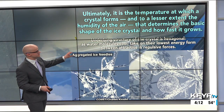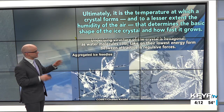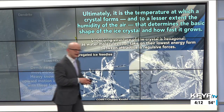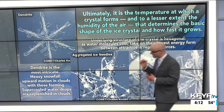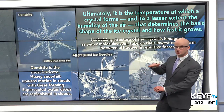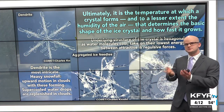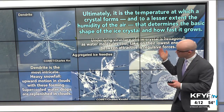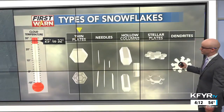The underlying structure of the crystal is hexagonal. As the water molecules cool, they take on their lowest energy form between attractive and repulsive forces with other molecules around them — that's why we usually get the six-sided snowflakes. You can also get needles, which don't stack up as efficiently as dendrites, which are the most intricate. That's when you get your heaviest snowfall. When you have upward motion in the clouds with these forming, that supplies more supercooled water droplets to aggregate — or through deposition — onto those ice crystals and form the bigger snowflakes.